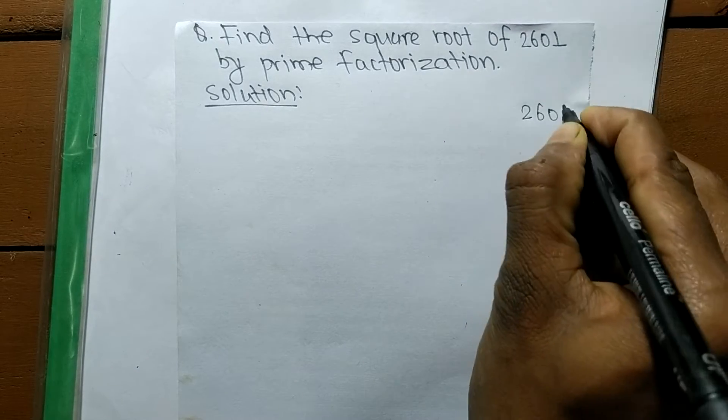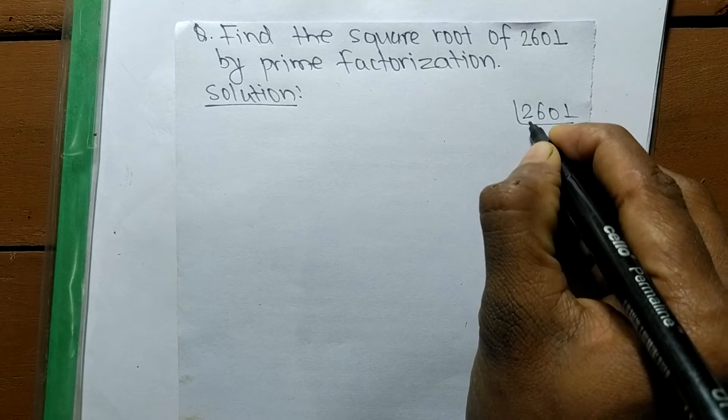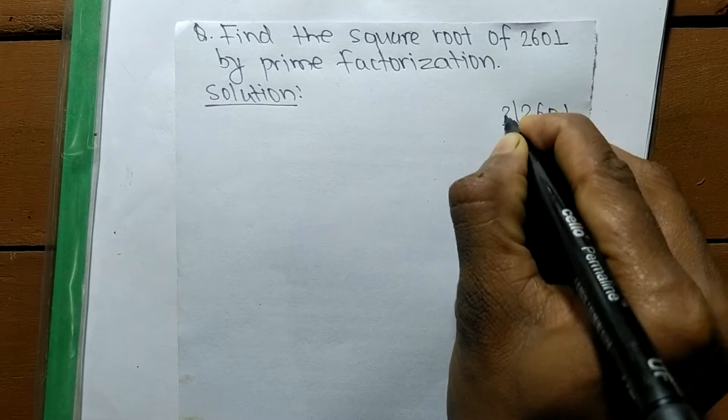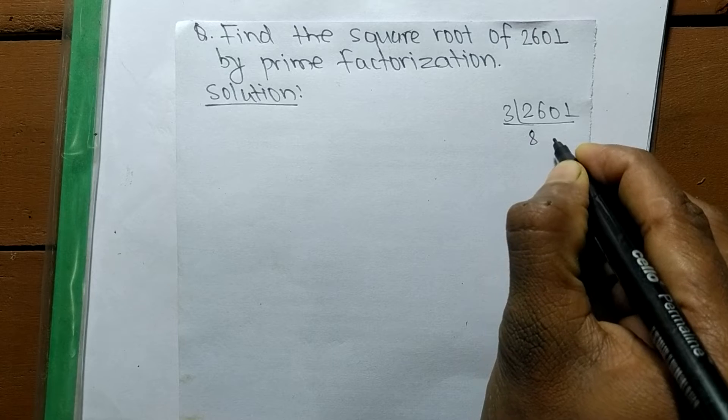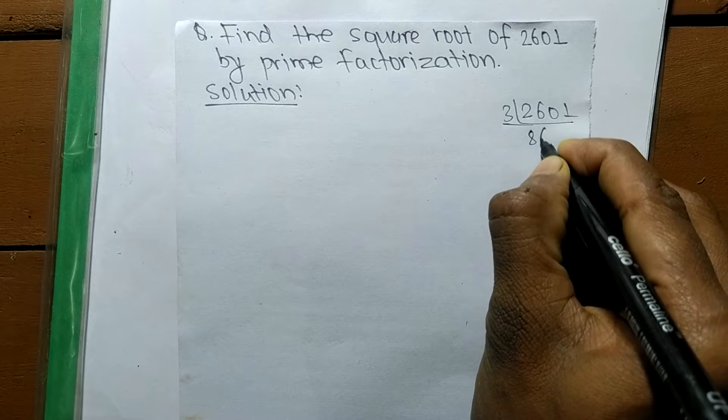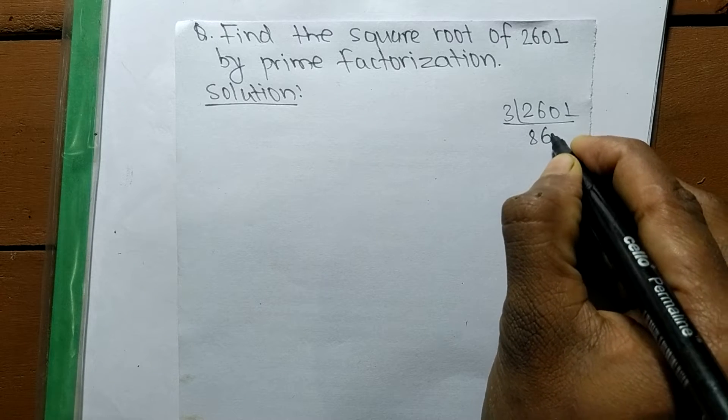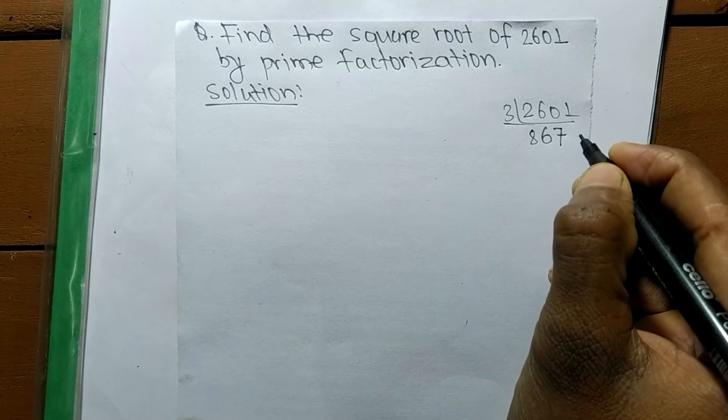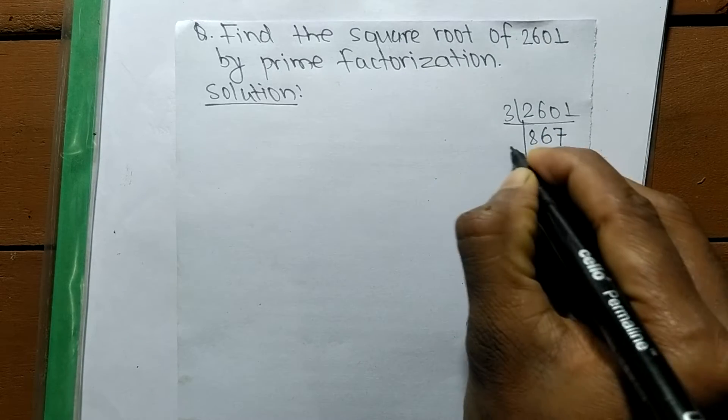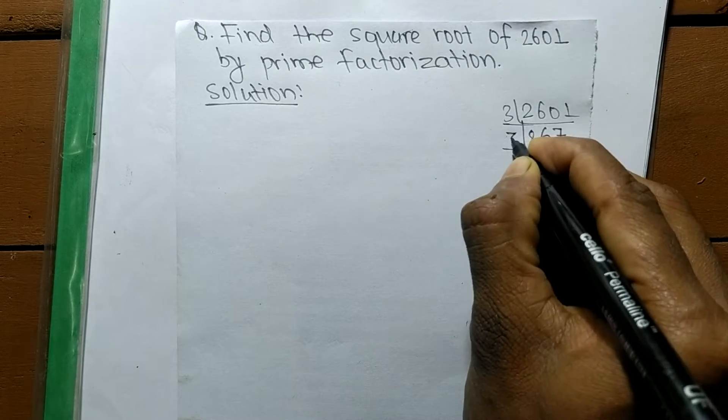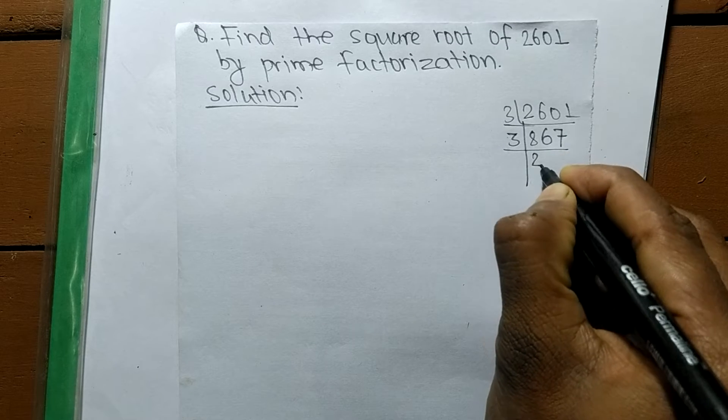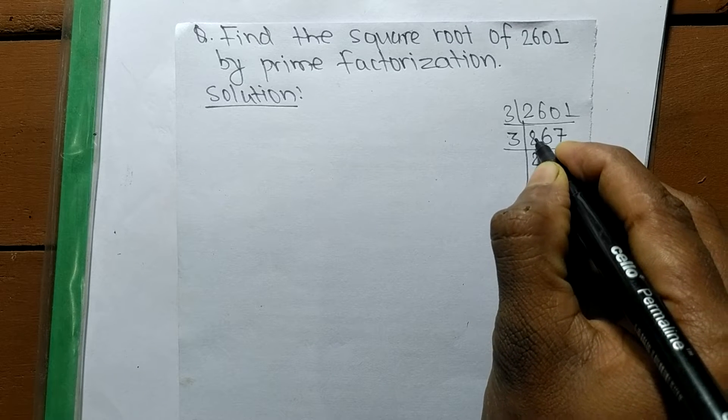So 3 times 8 means 24, like 3 times 6 means 18 and 3 times 7 means 21. So again we can take 3. 3 times 2 means 6, remaining is 2, 26. 3 times 8 means 24.